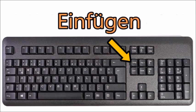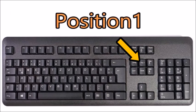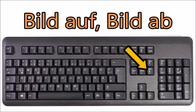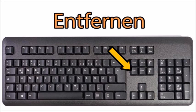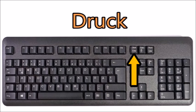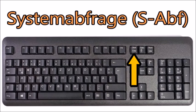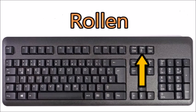The Insert key is called Einfügen in German. Position one is Position Eins. PgUp and PgDn are Bild auf and Bild ab — though I used to call it Bild rauf and Bild runter, which is basically the same but more colloquial. End is Ende. Delete is Entfernen. Above those is Print Screen, which is called Druck — it sometimes says S-Abf, which stands for Systemabfrage (system request), but I've never heard anyone call it that. Next to it is Scroll Lock, called Rollen.